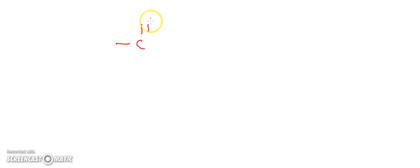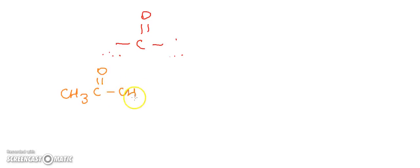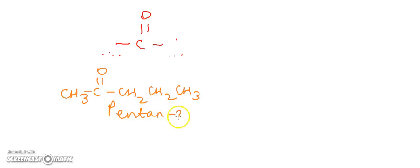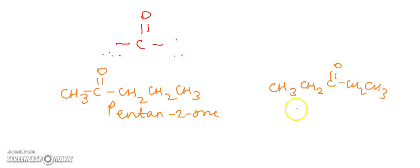Next is metamerism. Ketones show metamerism in which the isomers differ in the alkyl groups around the carbonyl group. For example, CH3-CO-CH2CH2CH3 (pentan-2-one) and CH3CH2-CO-CH2CH3 (pentan-3-one) are metamers with different alkyl groups on either side of the carbonyl group.